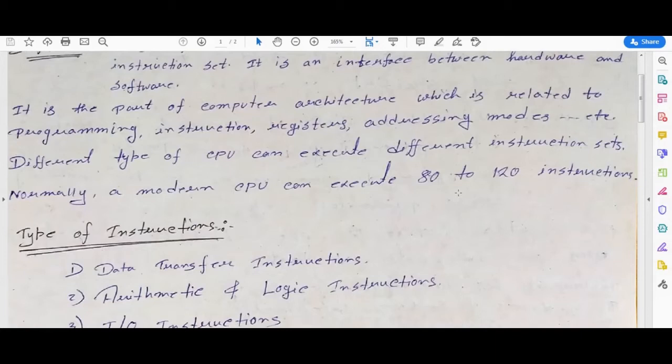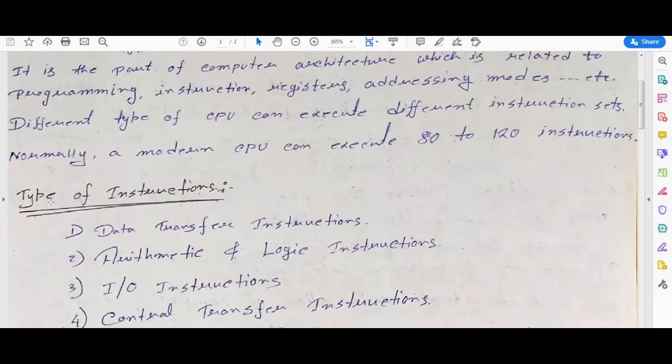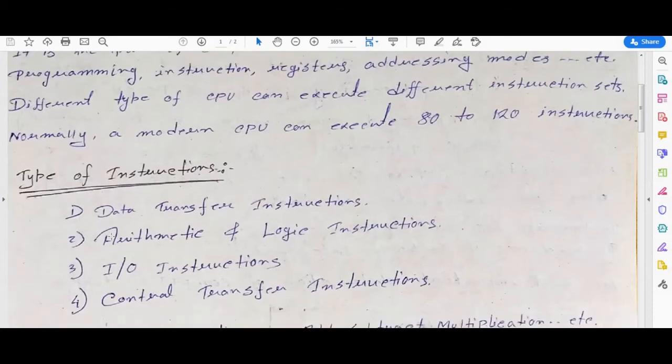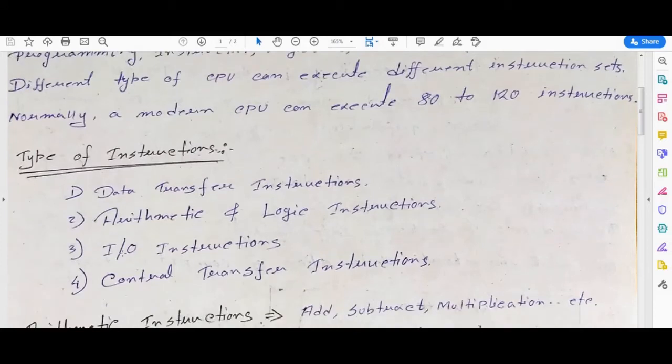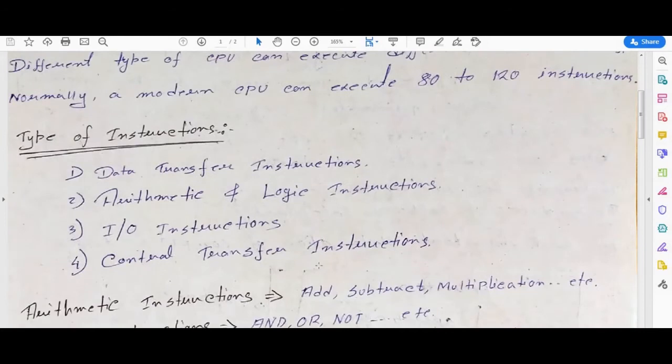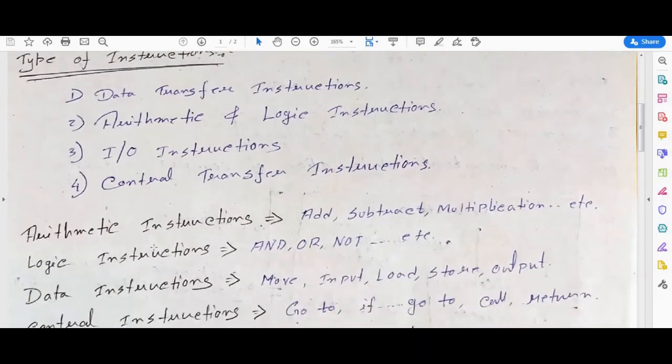Next is types of instructions. How many types of instructions are there? First is data transfer instructions, second is arithmetic and logic instructions, third is I/O instructions (that is input output instructions), and fourth is control transfer instructions. These four are the types of instructions which create interface between hardware and software.